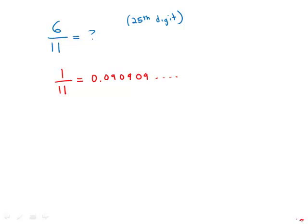If we multiply that by six, each one of those nines gets multiplied by six, and nine times six is 54. So six elevenths will be 0.545454 repeating.